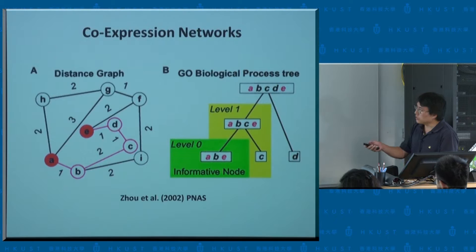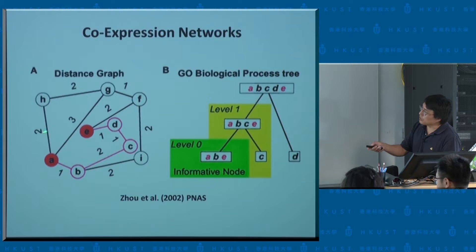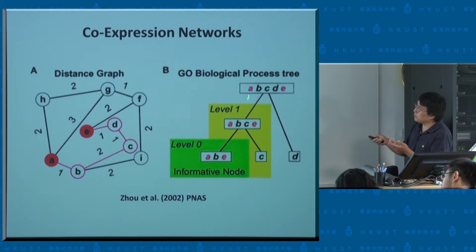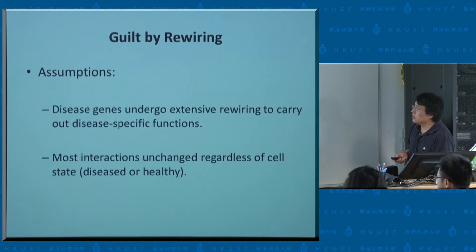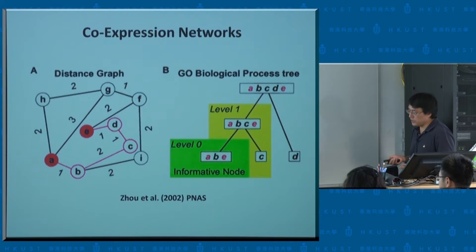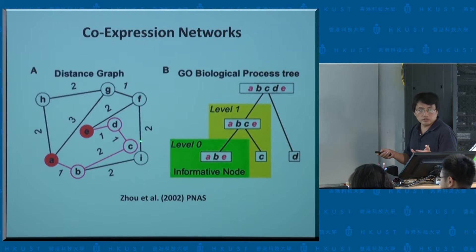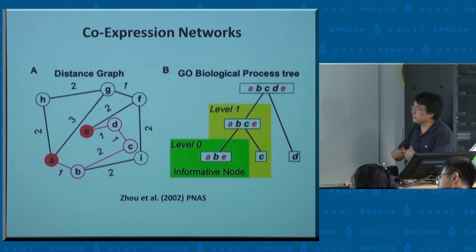This co-expression network is unbiased — every single gene on the microarray can be put on this graph, there's no selection and no pre-existing knowledge required. You can define the strength of association by the correlation value. You can apply the same idea as with known pathways: if this gene is associated with a disease, neighboring genes in the co-expression network may also be more likely to be associated. There's no fundamental difference between a known pathway and a co-expression network — you can apply the same Markov random field methodology.